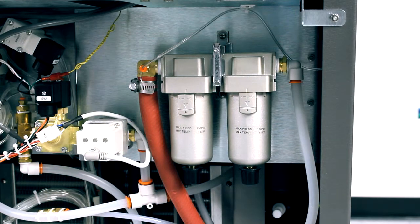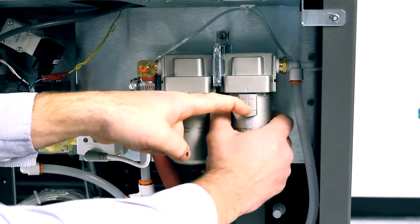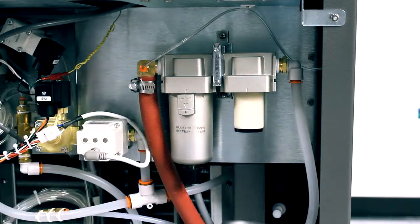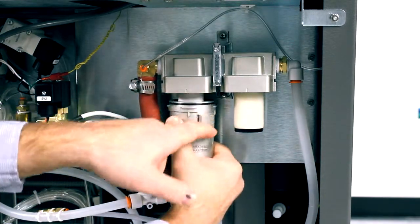To remove the filter bowls, push down on the detent and then twist and remove the filter bowl. This gives us access to the filter.